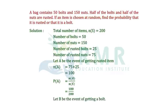Let B be the event of getting a bolt. n(B) equals 50. Probability of B equals n(B) by n(S), that is 50 by 200.